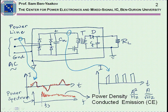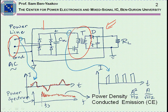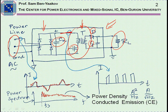Let's see first of all what conducted emission means. Here shown is a power supply which is based on a flyback type converter. It's fed from the AC line, has a bridge rectifier, and then there is a capacitive filter. There is a switcher in here, a coupled inductor, a diode, a filtering capacitor, and this actually represents the load. If you look at this line here leading to the switcher, we're going to see current pulses of this shape, very typical of a PWM system.